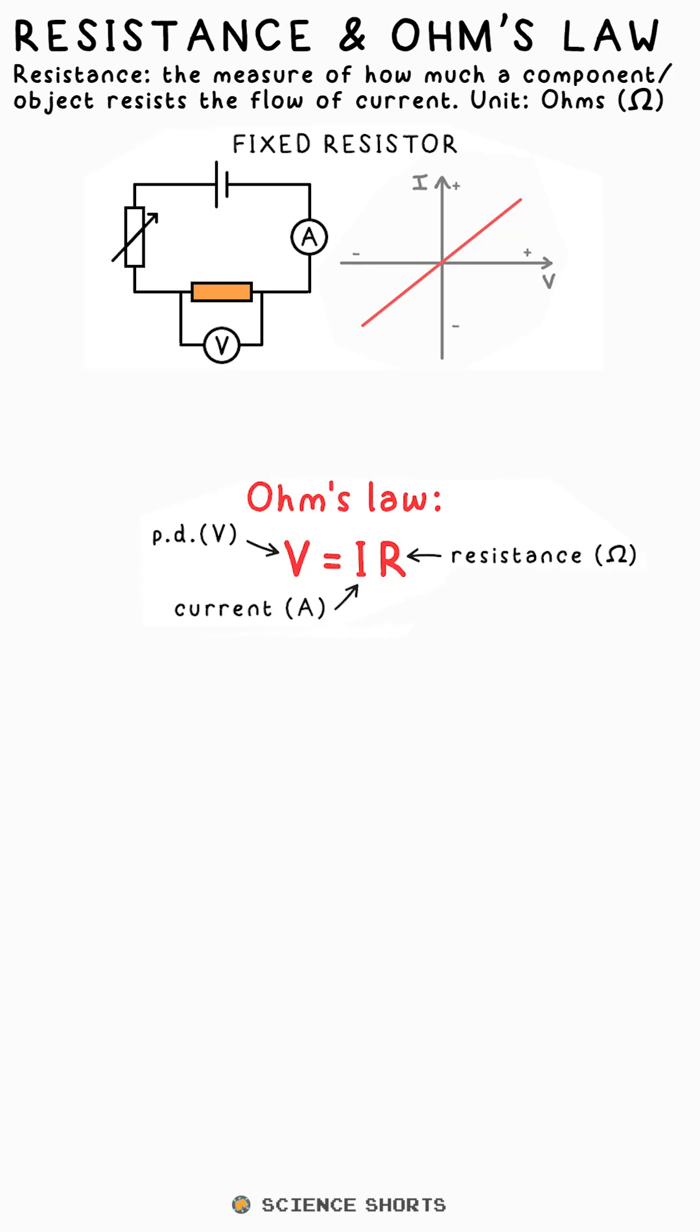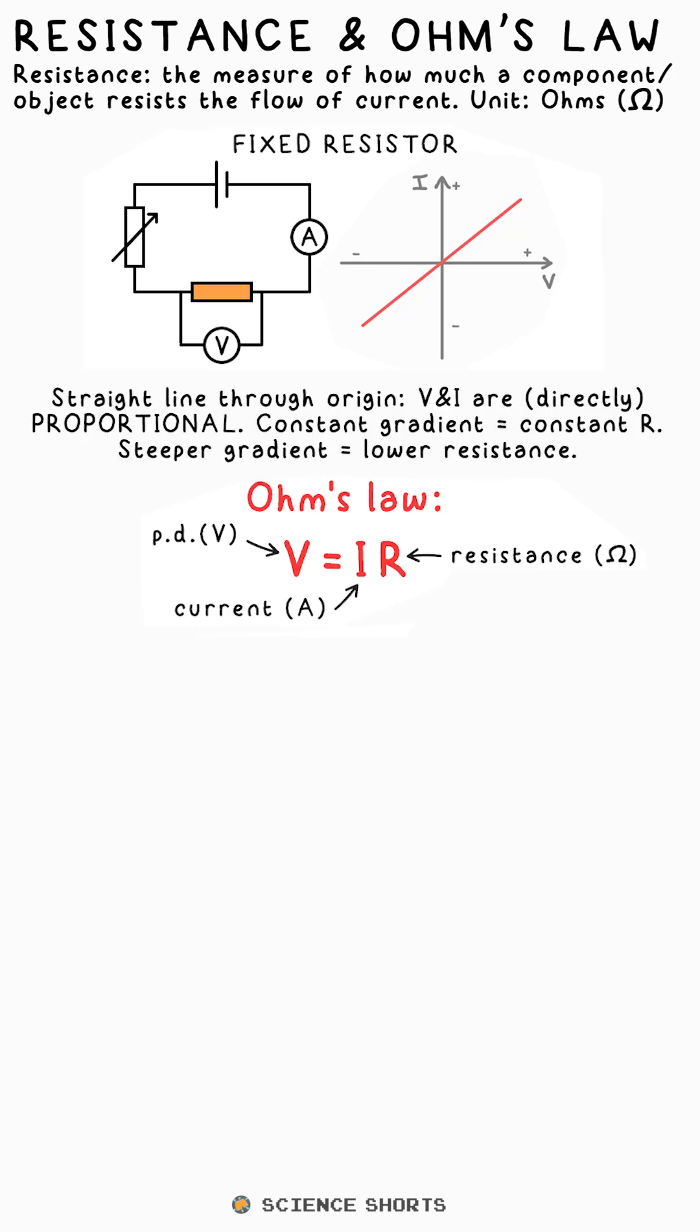We can get the resistance of a component from an IV graph like this by just picking a point on the line and rearranging Ohm's Law. For a resistor, you'll end up with the same answer no matter what point you pick.